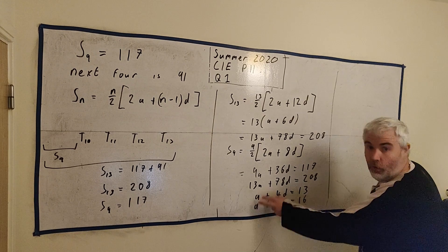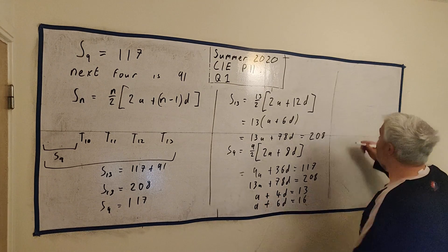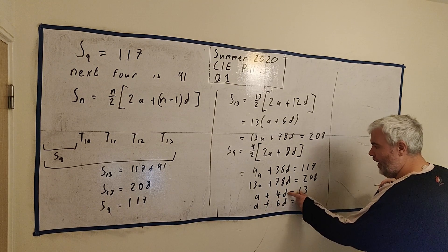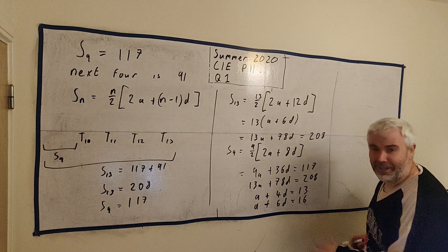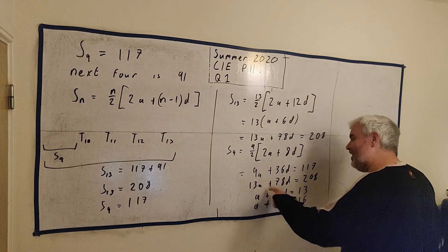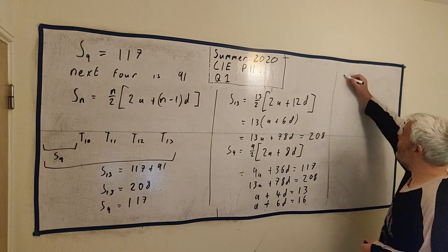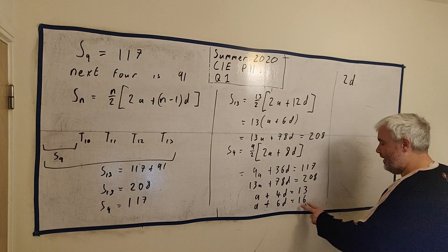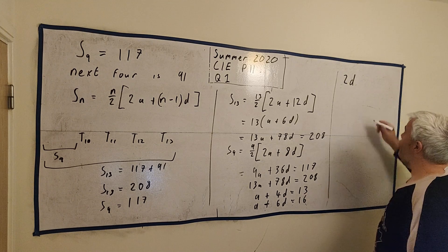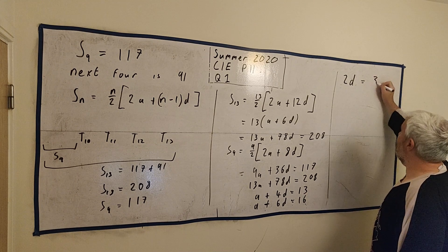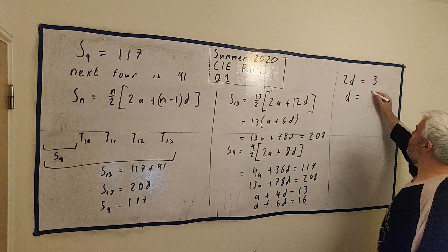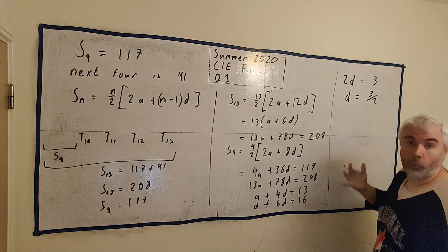Again, an even easier simultaneous equation. Let's go ahead and take the bottom row away from the top row. Actually, let's do it the other way around to get positive numbers. Bottom row minus the top row. So a minus a is still nothing. 6d minus 4d is 2d. 16 minus 13 is equal to 3. So d must equal 3 divided by 2, or 1 and a half.